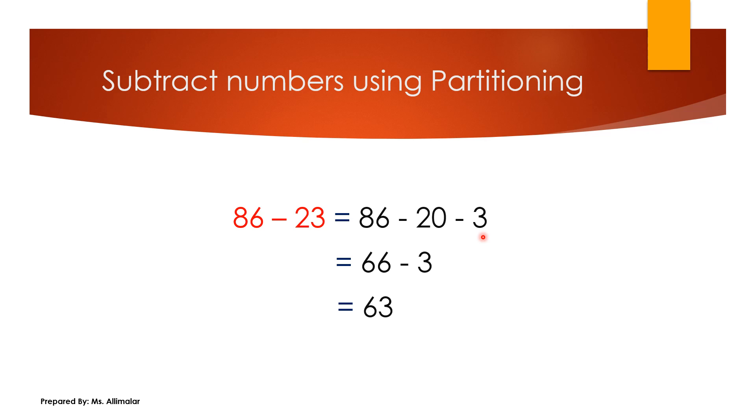That is the reason they partitioned. 86 minus 20 and then minus 3. We're doing it separately. Clear? Now, first thing, don't look at the 3 first. Just look at 86 minus 20.